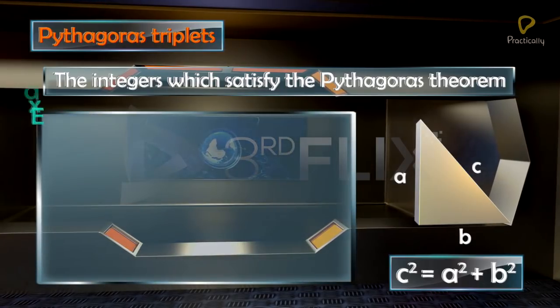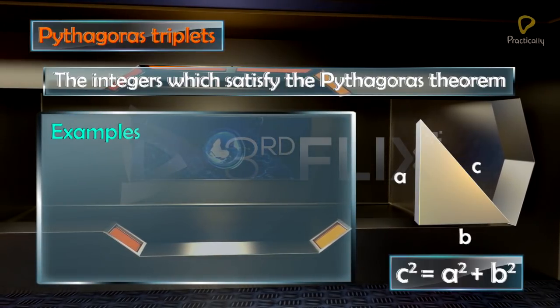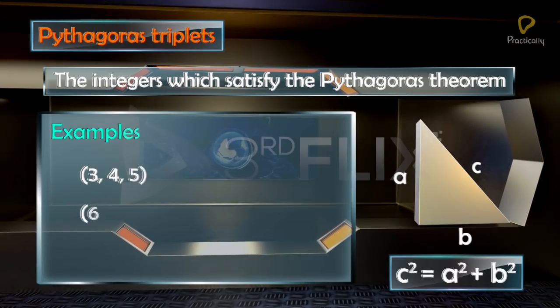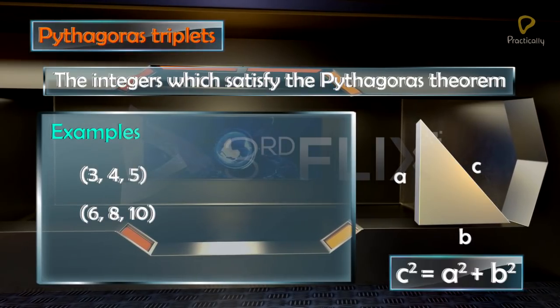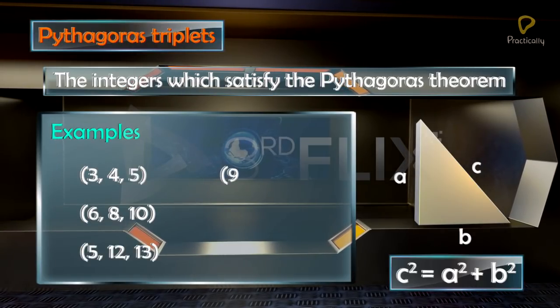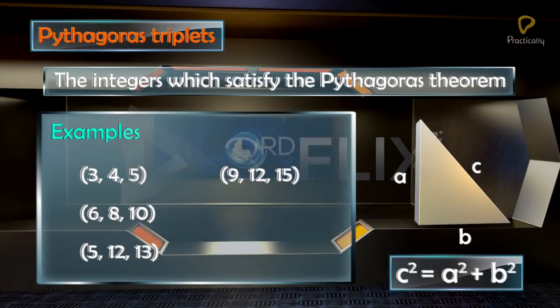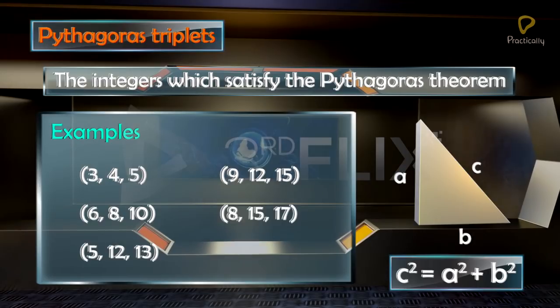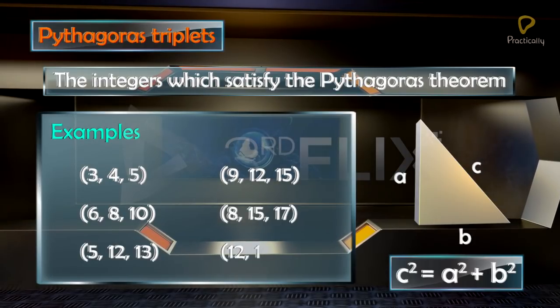Here are a few examples of Pythagoras triplets: (3, 4, 5), (6, 8, 10), (5, 12, 13), (9, 12, 15), (8, 15, 17), (12, 16, 20).